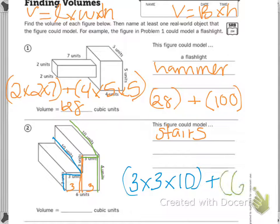So, 6 times 3 times 10. We have 3 times 3 is 9 times 10, so 9 times 10 is 90.